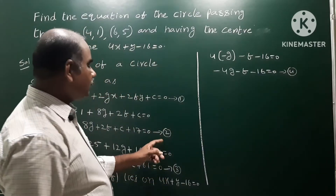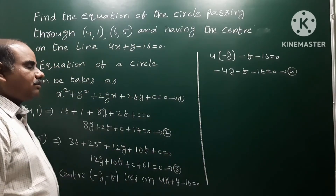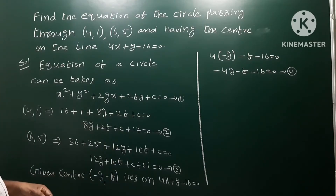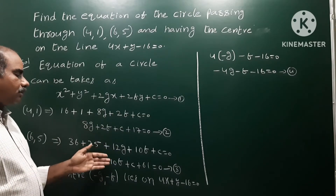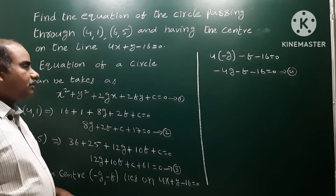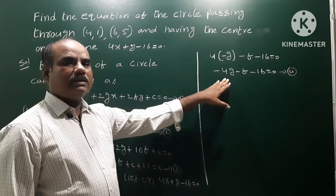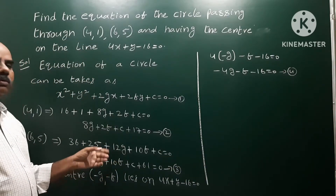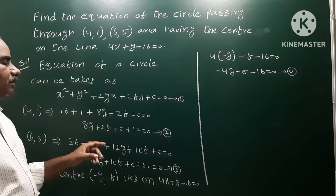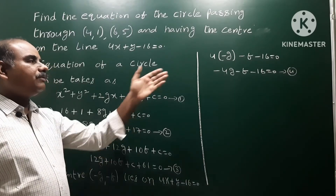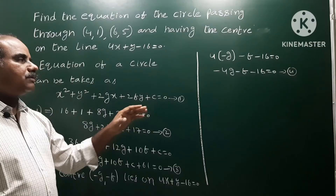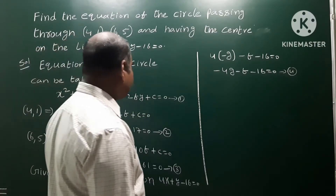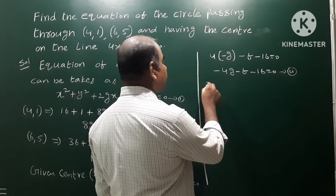Let us say this is equation number 4. We already have equations 2, 3, and now equation 4. By solving these three equations we get the required circle. To solve equations 2 and 3, we subtract: equation 2 minus equation 3, which cancels c.